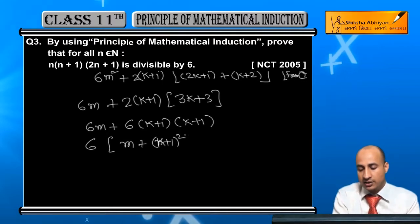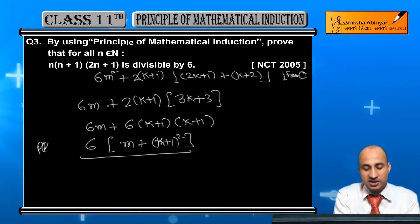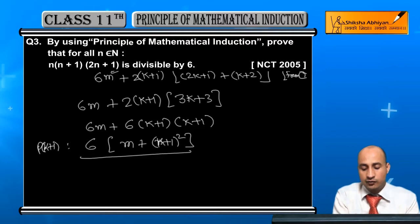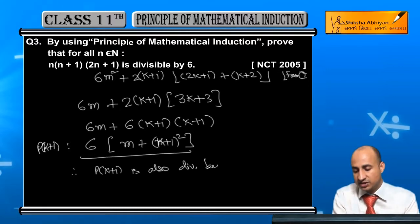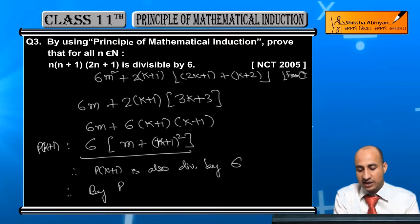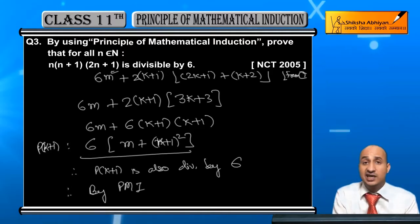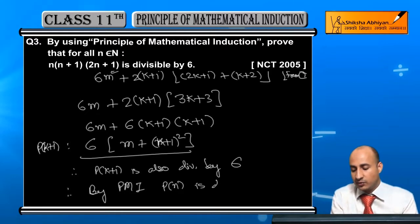Now from this expression, what do you find? The P(K plus 1) that you took is a multiple of 6. Therefore, P(K plus 1) is also divisible by 6. Therefore, by principle of mathematical induction, by principle of mathematical induction, I can show P(N) is divisible by 6, which was given.